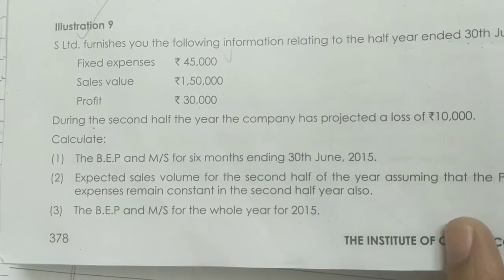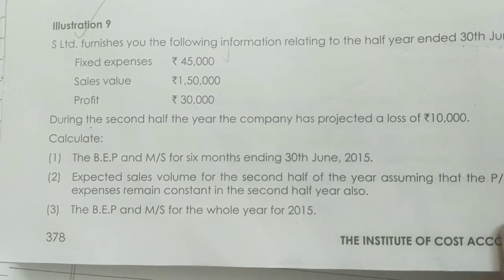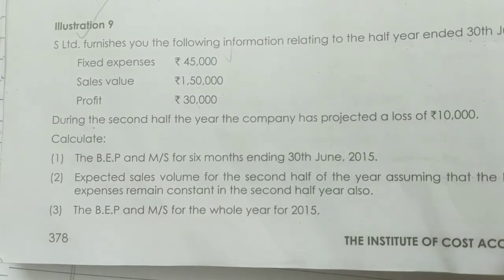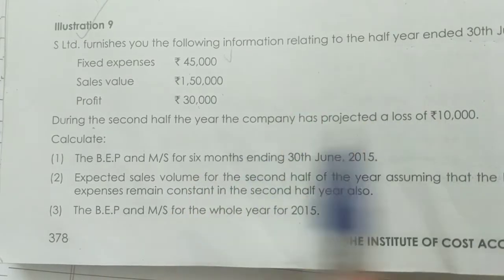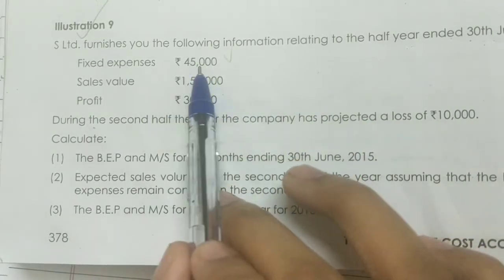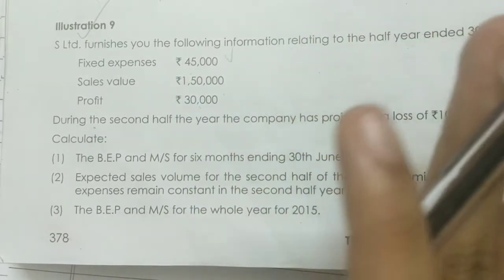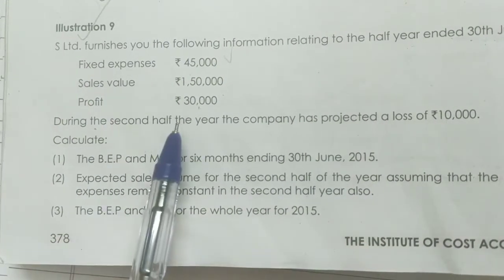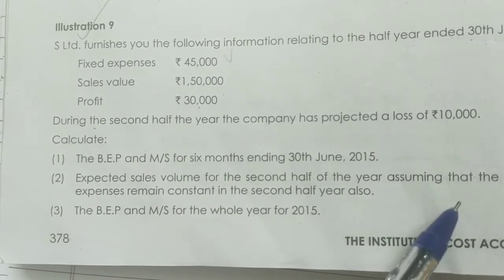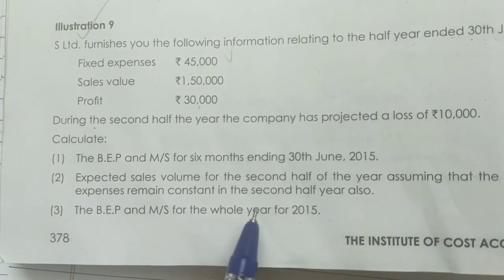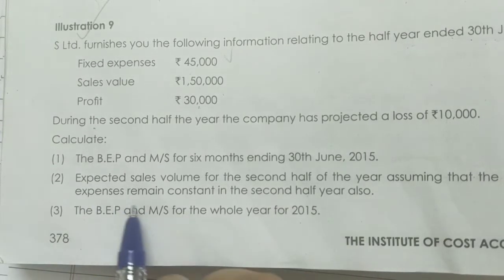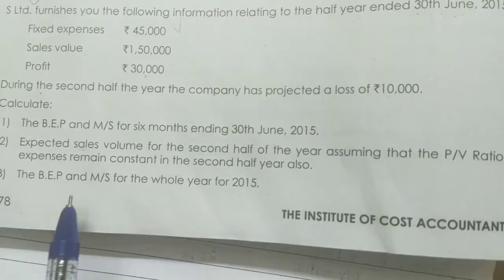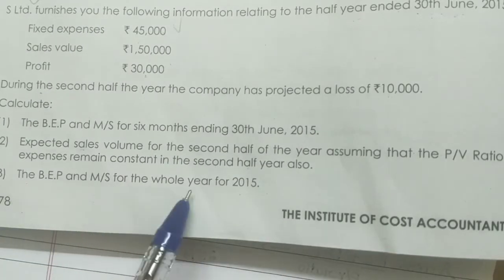Expected sales volume for the second half of the year, assuming that the PV ratio and fixed expenses remain constant in the second half year also. That is, PV ratio is the same and fixed expenses are $45,000. This $45,000 is the same as fixed expenses for the second half of the year. We have to find PV ratio, BEP, and MOS with fixed expenses remaining constant.